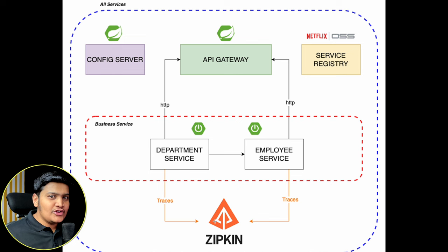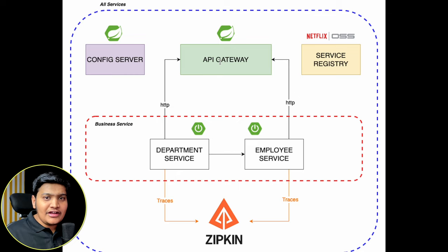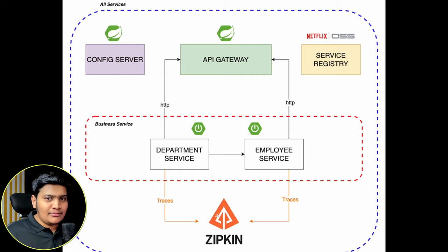With all the architecture details covered, let's start building our application. The plan is to create the Department Service, then the Employee Service, connecting each to the Service Registry, then adding the API Gateway, then the Config Server to serve all configurations for all services, and all logs will be traced by Zipkin.